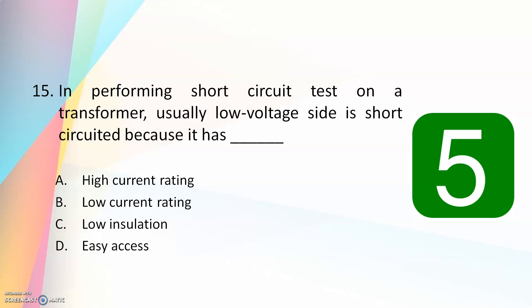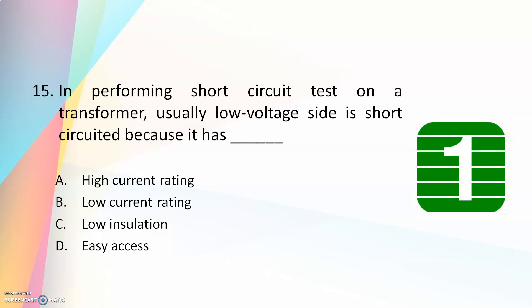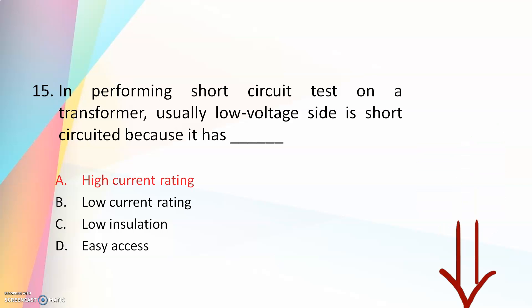Fifteenth question: in performing a short circuit test on a transformer, usually the low voltage side is short-circuited because it has — high current rating, low current rating, low insulation, or easy access. The answer is high current rating. We short-circuit the low voltage side because the supply is applied on the high voltage side where the current is minimum. The requirement of a short circuit test is rated current in the primary, and under short circuit conditions, only a low voltage is required on the high voltage side.